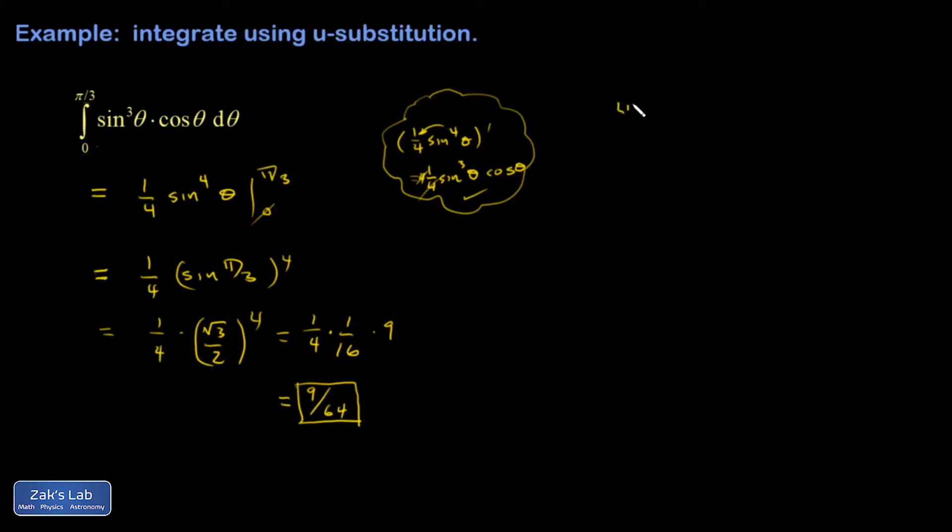So I'm going to let u equal sine theta. So I'm just taking the inner function here. I have this function sine theta all raised to the third power. I want that to look like a u cubed. And then du is going to be cosine theta d theta. And I already have that piece. So now I have u cubed du.